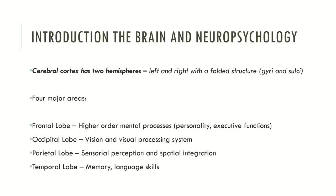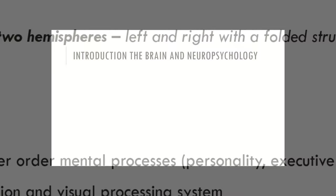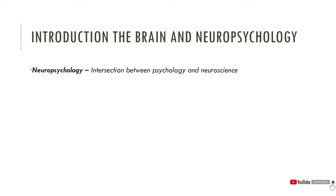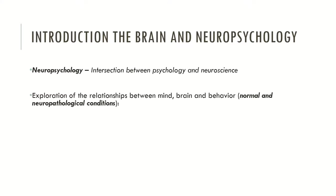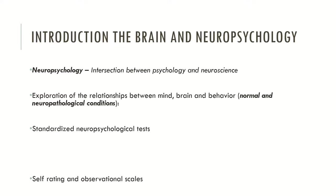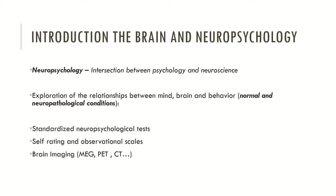The cerebral cortex is divided into four major areas — frontal, parietal, occipital, and temporal lobes — all responsible for mental processes and neurocognitive functions. Neuropsychology is the intersection between psychology and neuroscience, concerned with exploring relationships between mind, brain, and behavior — both normal and abnormal. Abnormal conditions relate to neuropathological diseases. Neuropsychologists explore these relationships through standardized neuropsychological tests, self-rating and observational scales, brain imaging, and electroencephalography.